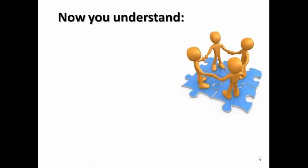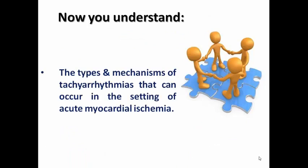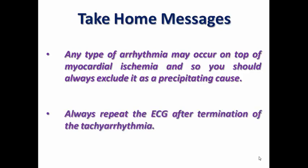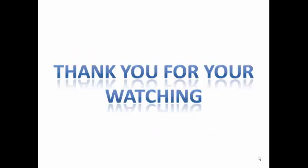In summary, today we learned the types and mechanisms of tachyarrhythmia in acute myocardial ischemia, reviewed the three basic mechanisms and their applicability in ACS, and identified the arrhythmias most common in this setting. The take-home message: any type of arrhythmia may appear on top of myocardial ischemia — always exclude it as a precipitating cause, and always repeat the ECG after termination of the tachyarrhythmia. The next lecture will cover bradyarrhythmias in acute coronary syndrome.